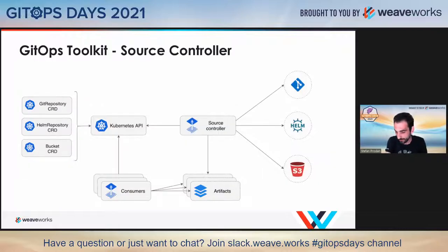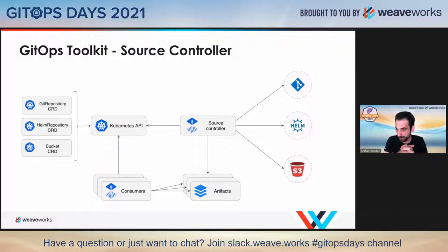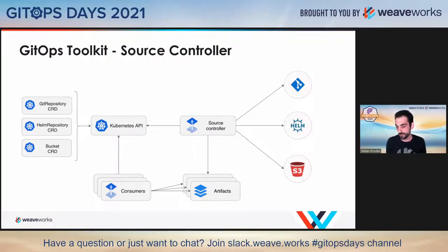You can extend the GitOps toolkit with other things if you feel like you need a particular feature that Flux doesn't allow you to do. At the core of the GitOps toolkit is a controller called source controller. This tool manages sources — it reaches out outside the cluster and fetches things like Git repositories, Helm charts from Helm repositories, S3 buckets, and so on. It brings those manifests inside the cluster and bundles them under artifacts, which are tars containing those particular manifests.